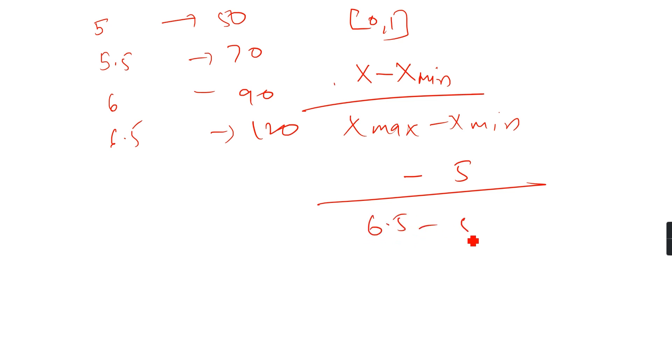6.5 minus 5 is 1.5. If I want to normalize this, I'll put this here. So this will be 1 and this will be 1.5, which is 2 by 3 or 0.75. So my 6 value will be changed to 0.75.